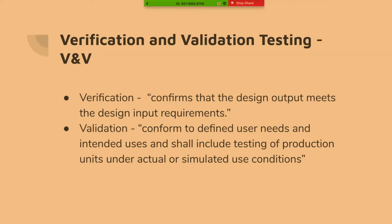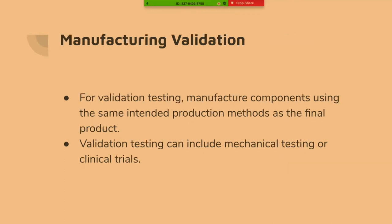Validation testing basically means going back to the original user needs and checking with a production-level part. You actually have to use the same manufacturing processes you would use in production, and compare those results to the original user needs to confirm that yes, it does actually meet what the user was looking for. That testing could be mechanical testing or it could be an actual clinical trial — getting it into the hands of the healthcare provider or surgeon.